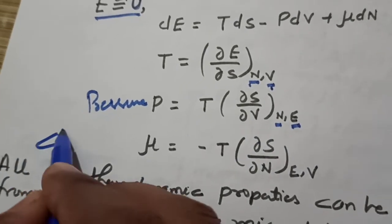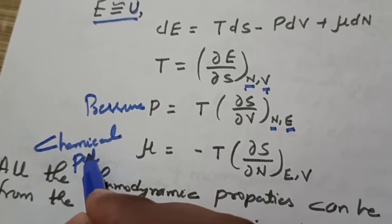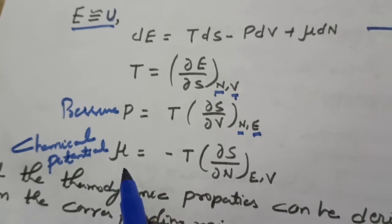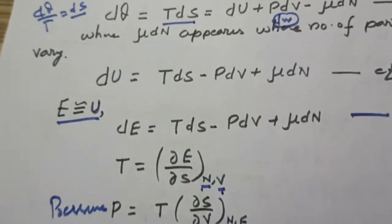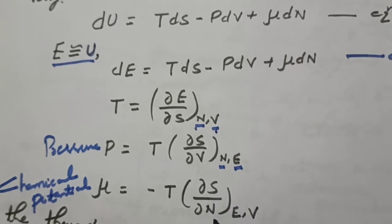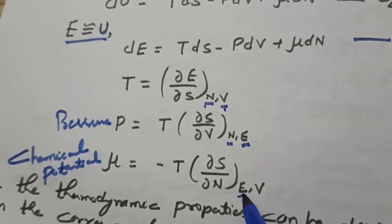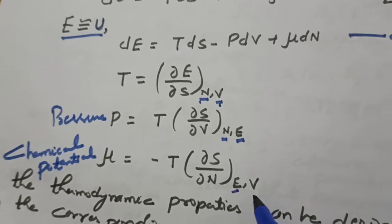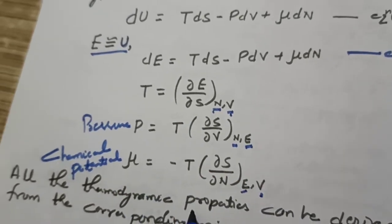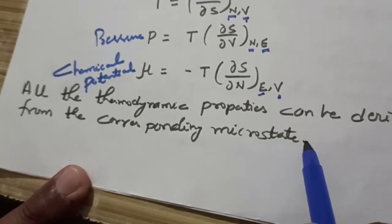The chemical potential μ is defined from the equation as μ equals minus T times dS upon dN, keeping energy and volume constant. If you know these three properties — temperature, pressure, and chemical potential — all thermodynamic properties can be derived from the corresponding microstates.